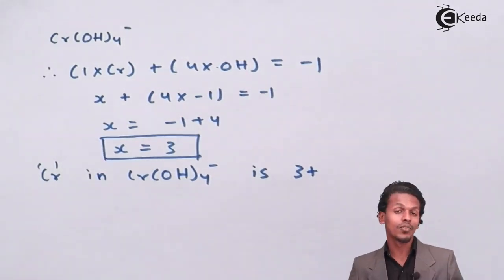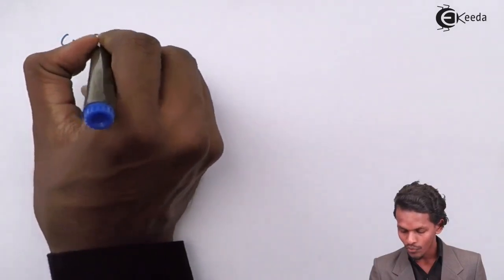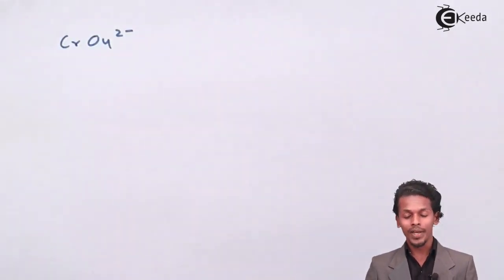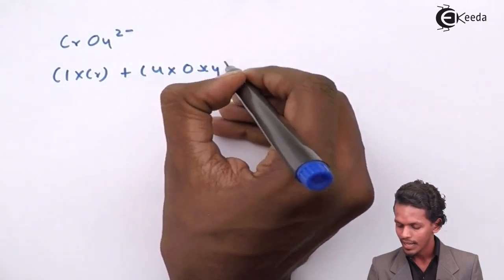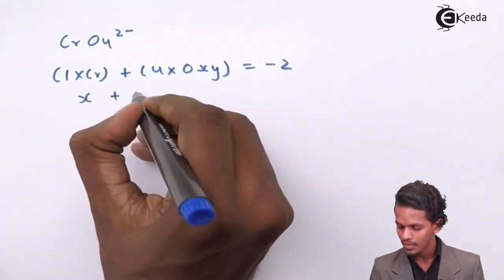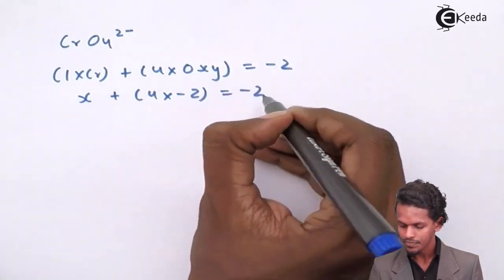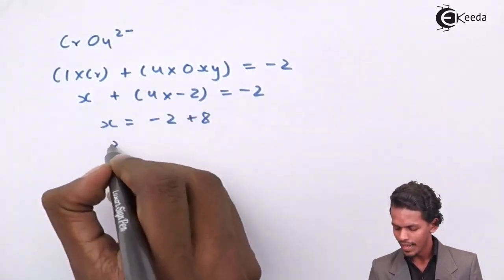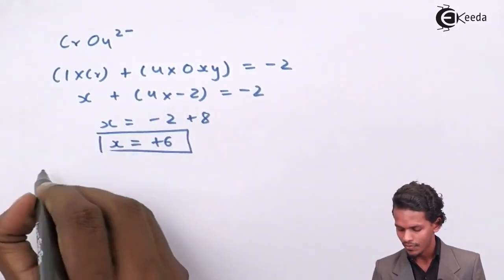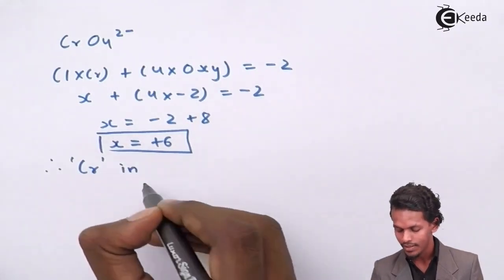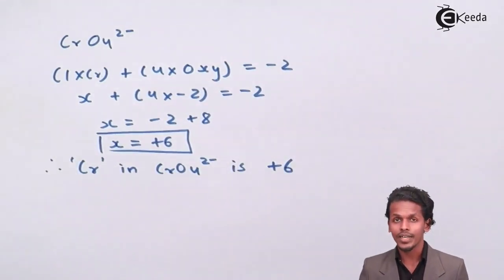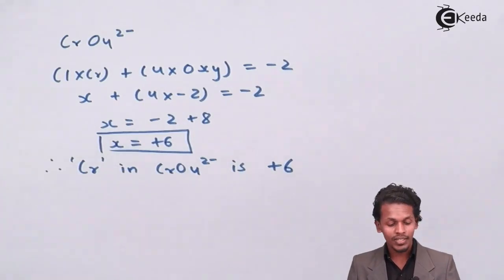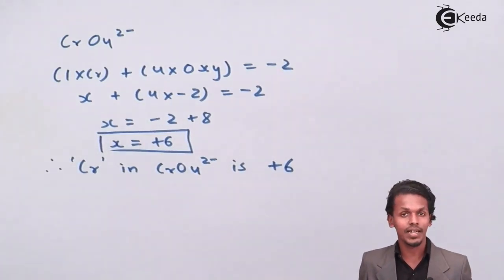Now for the product, CrO₄²⁻. We write: 1×Cr + 4×(−2) for oxygen = −2. Solving: X + (−8) = −2, giving X = +6. So the oxidation number of Cr in CrO₄²⁻ is +6. For the other product, Cl⁻, the oxidation number is simply −1.